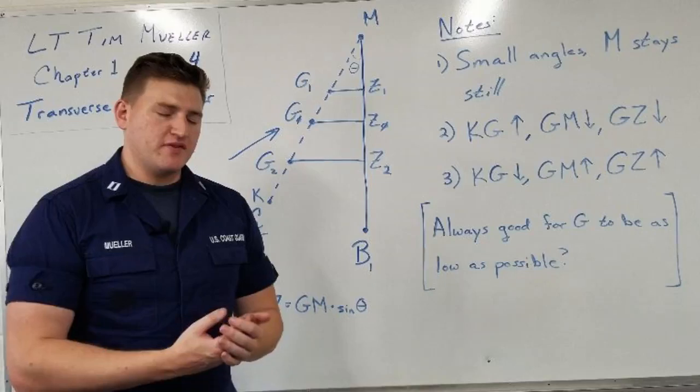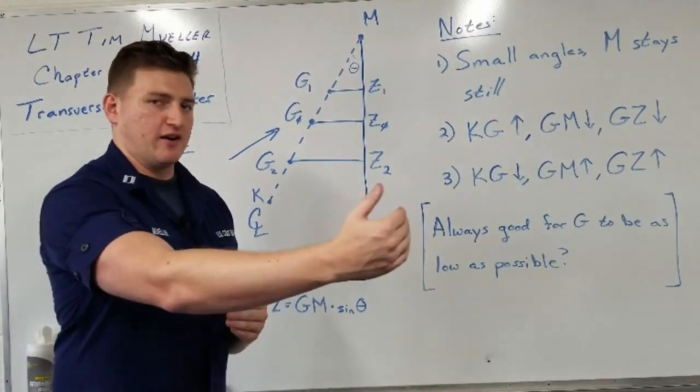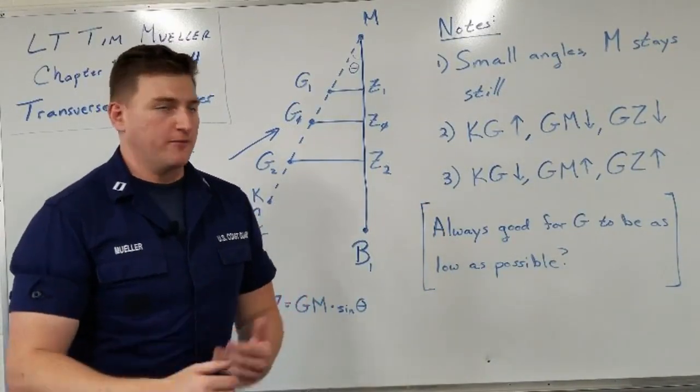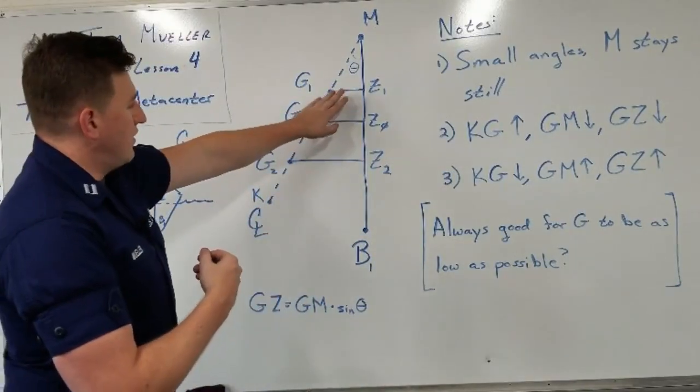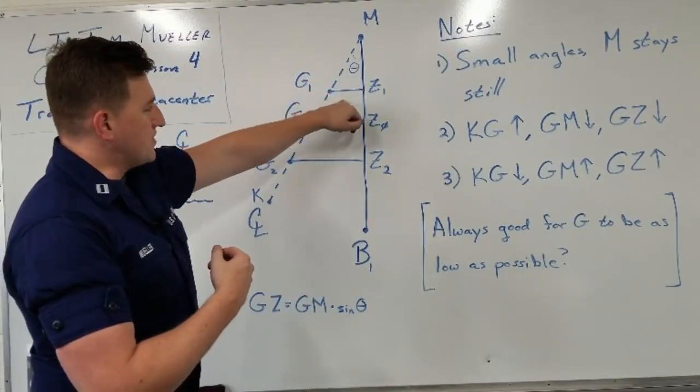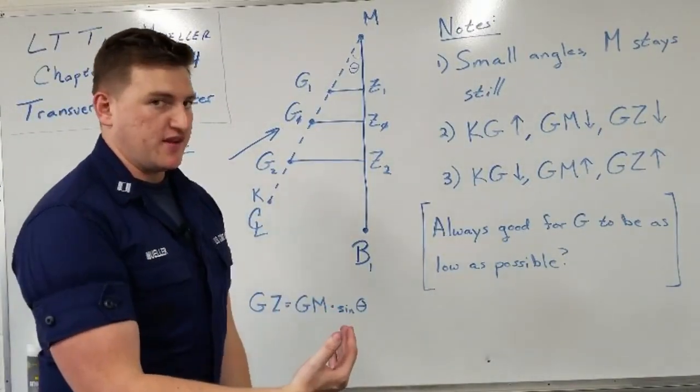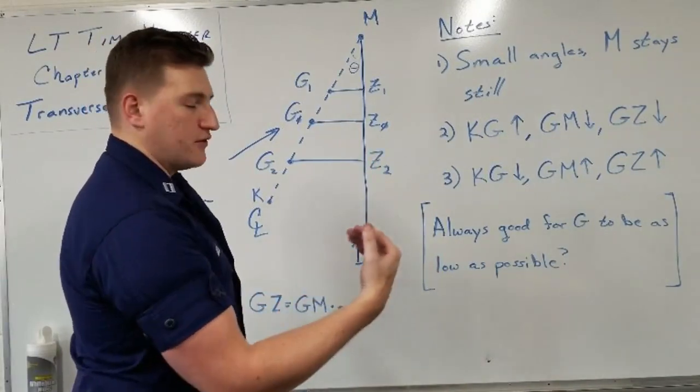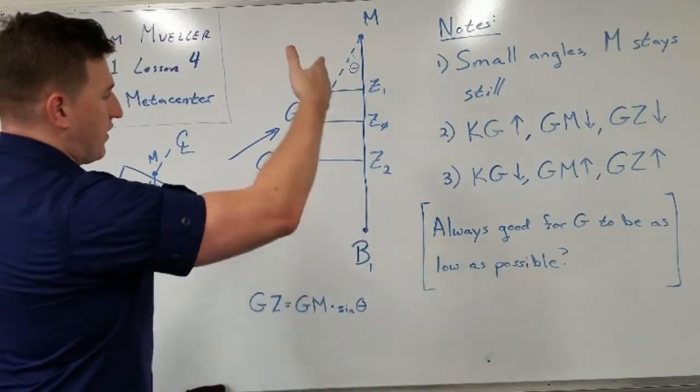That makes sense. If something becomes more top-heavy, as we make that center of gravity go up higher and higher and higher, we kind of intuitively think, okay, it's less stable. Here, we're actually starting to see it. We have a smaller righting arm, which means that if the displacement stays the same, we have less of a righting moment that's going to want to kick us back into our equilibrium position, which is straight on an even keel.